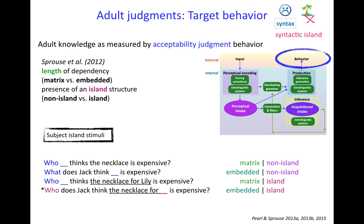They did it for things called subject islands, using the same two factors and the same four stimulus types. Here the subject island structure is 'the necklace for blank' — that's the subject. So 'who does Jack think the necklace for is expensive' is your island stimulus: it has both an embedded dependency and an island structure present.